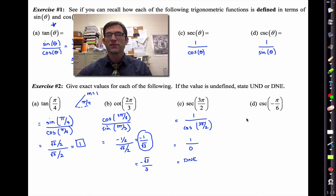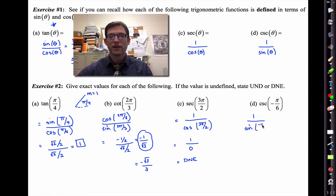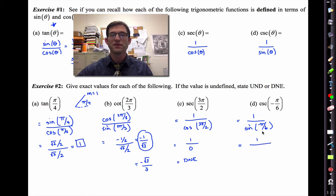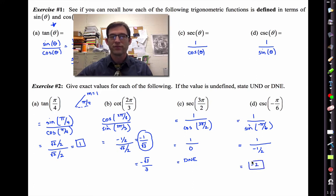The cosecant of negative pi over six is going to be one divided by the sine of negative pi over six. The sine of negative pi over six will be negative one half. And one divided by negative one half is negative two.